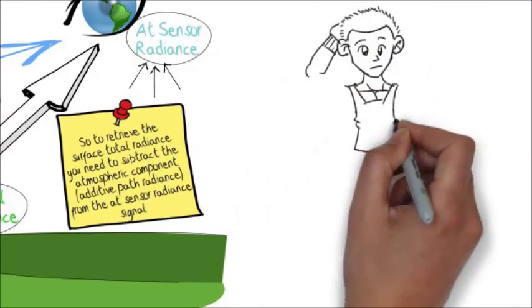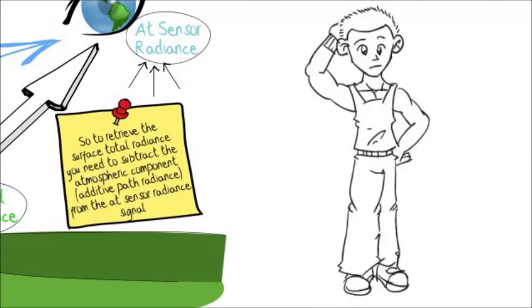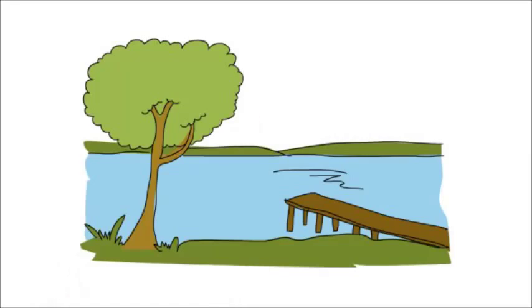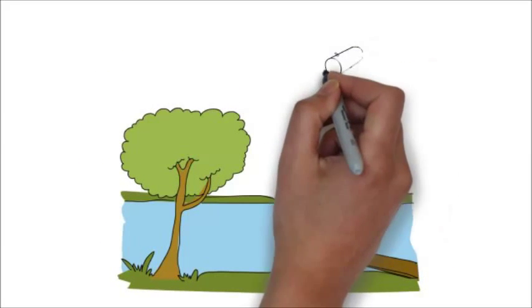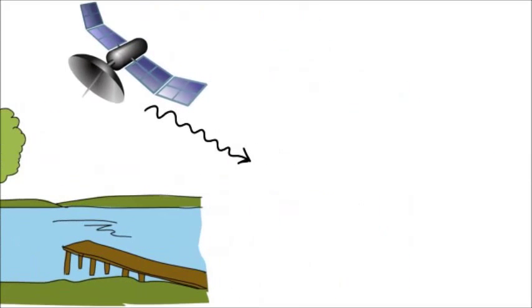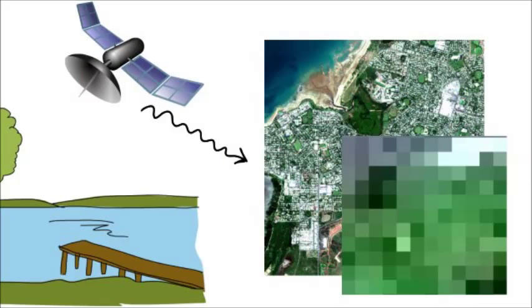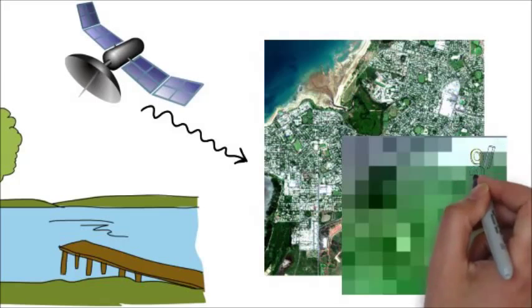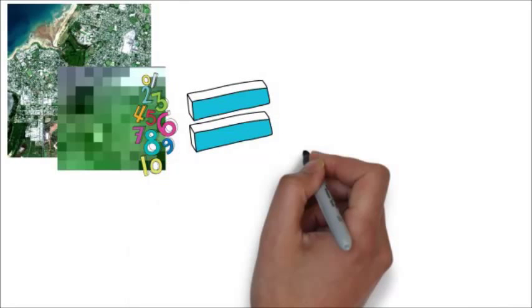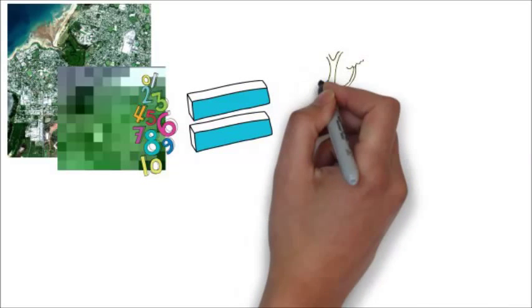That all sounds very complicated. What does that actually mean? Let's start again with a scene on the ground. A satellite will record reflected energy and create an image in the process. An image is made up of pixels, and pixels are made up of numbers. All of these numbers are equal to the light reflected from ground surface features, plus those scattered in the atmosphere.